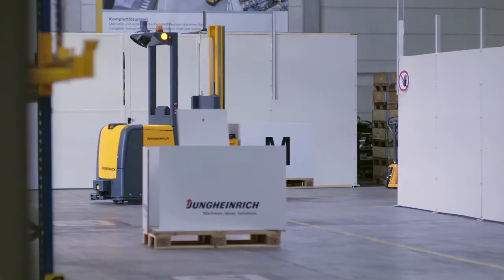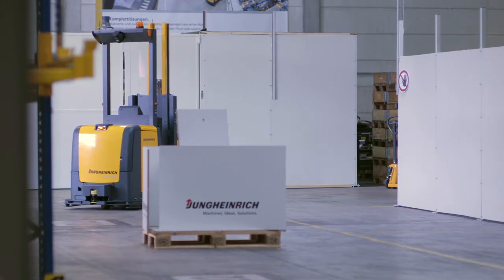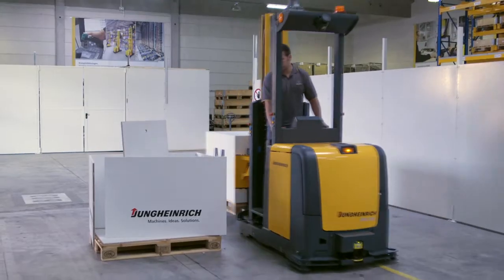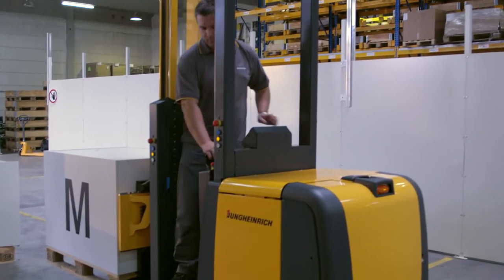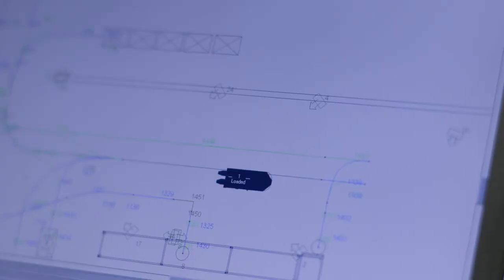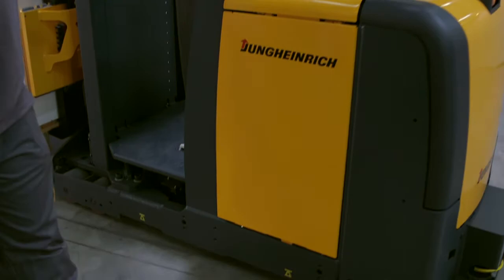The APM also detects objects on the planned route and comes to a complete stop automatically. The employee can move the truck manually. By pressing a button the APM is returned to its specified route enabling it to continue performing its tasks automatically.